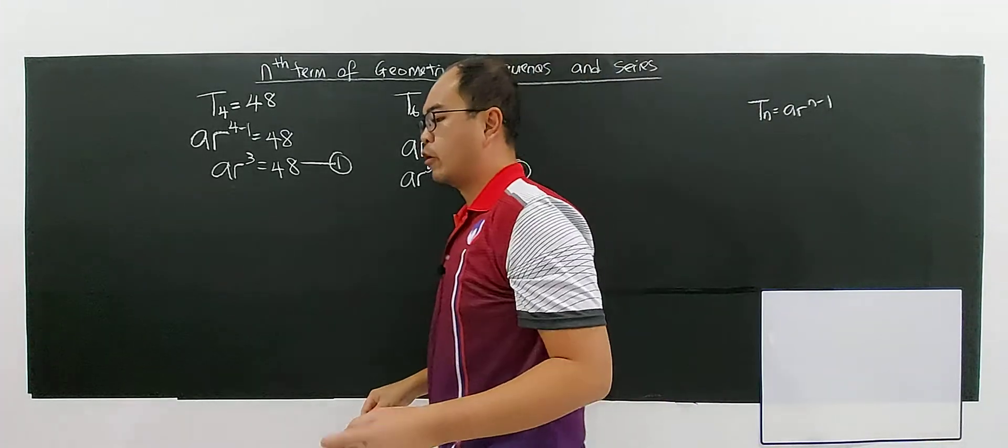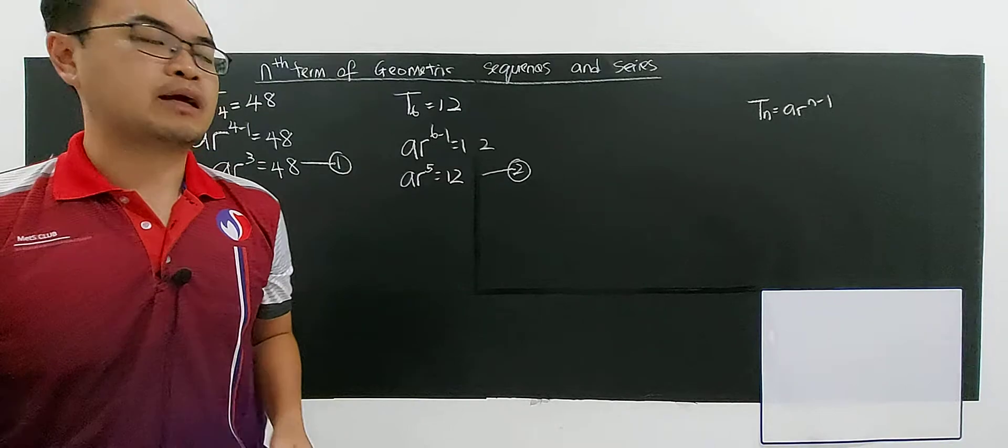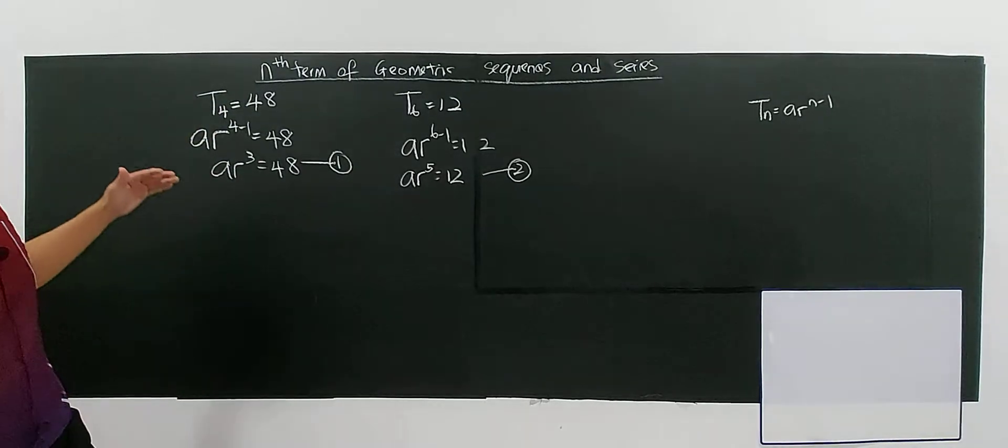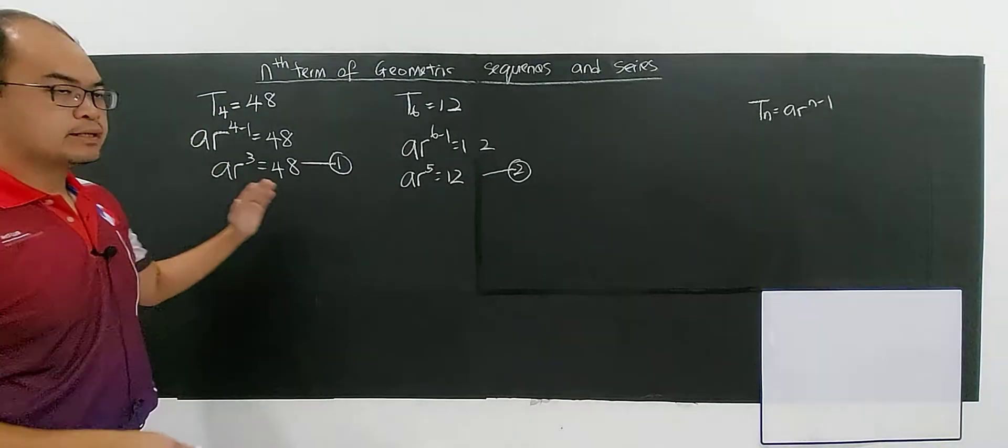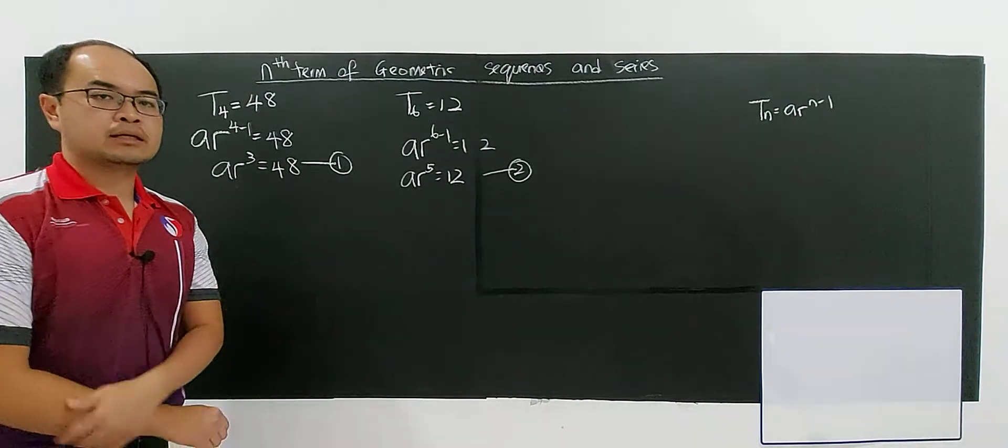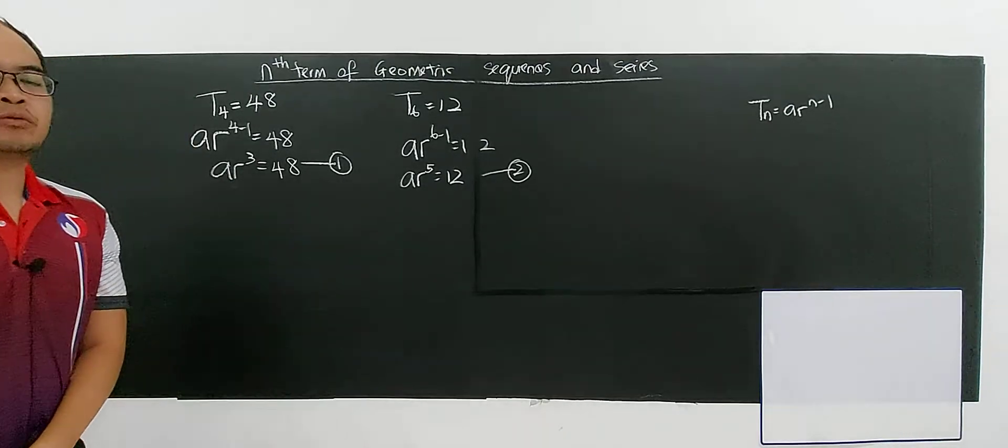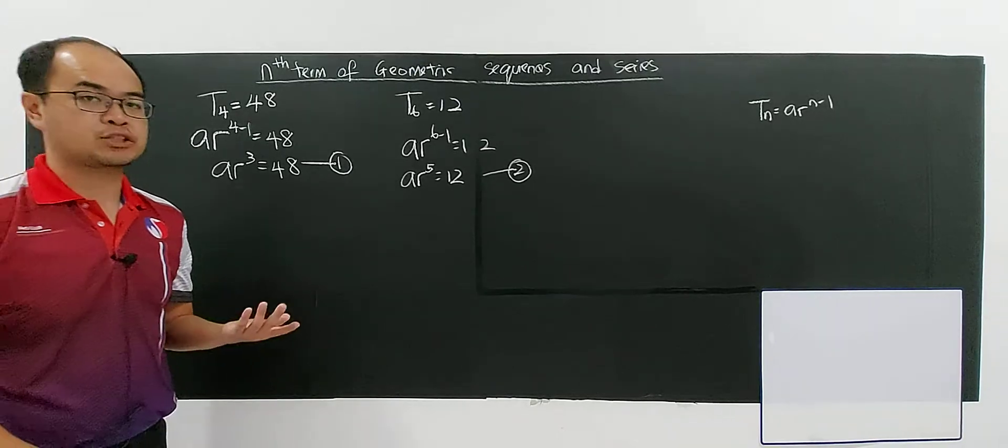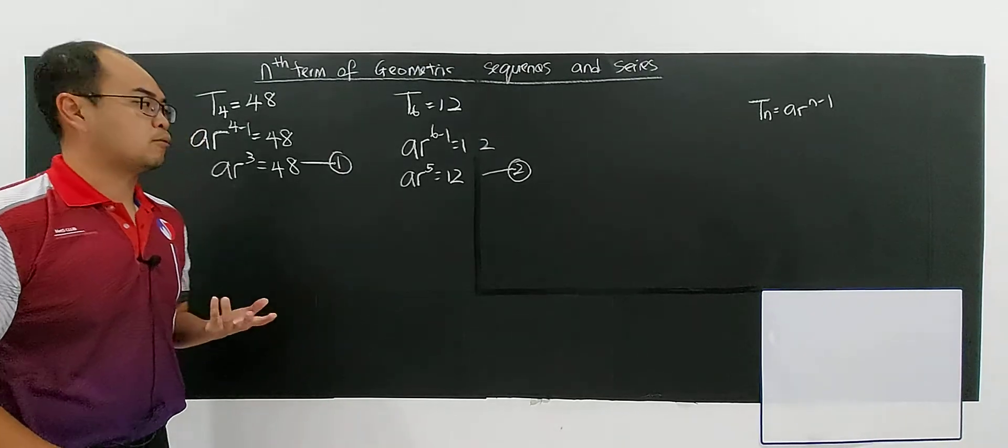This is very different from arithmetic sequences. For arithmetic sequences, we find the value of a and d. This is finding a and r. If you look back at the arithmetic sequence video, the technique uses subtraction and addition.